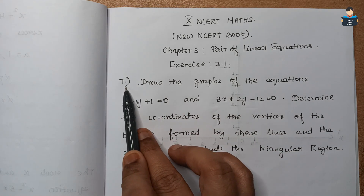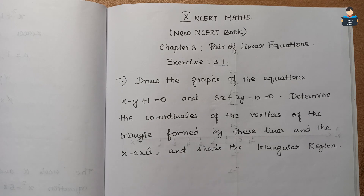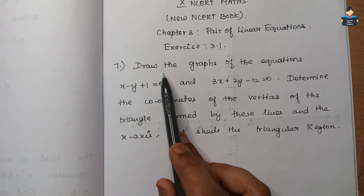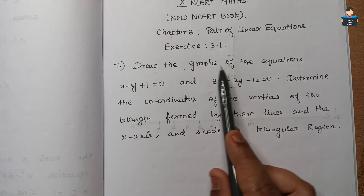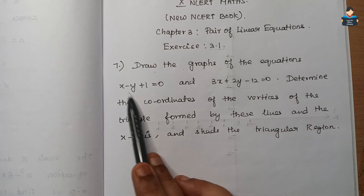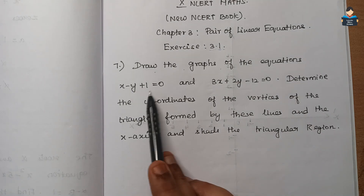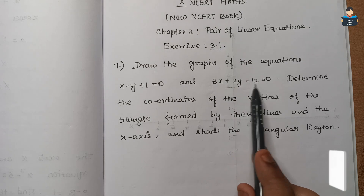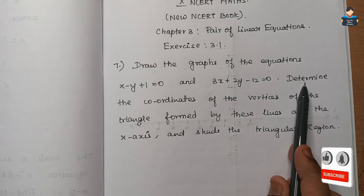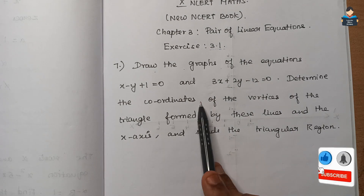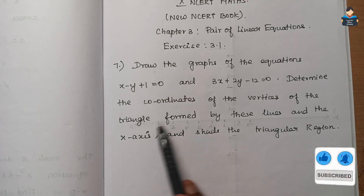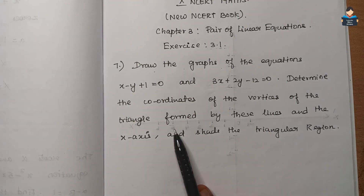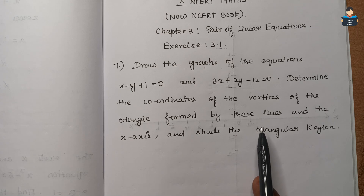Question number 7: Draw the graphs of the equations x minus y plus 1 equal to 0 and 3x plus 2y minus 12 equal to 0. Determine the coordinates of the vertices of the triangle formed by these lines and the x-axis, and shade the triangular region.